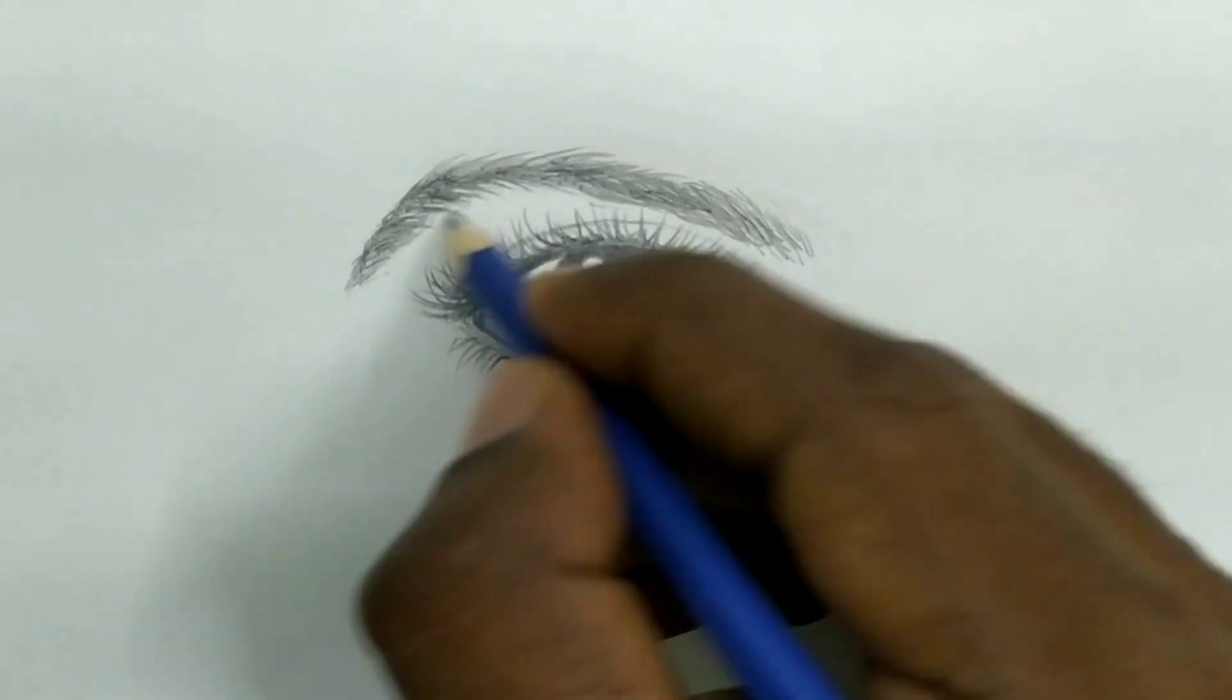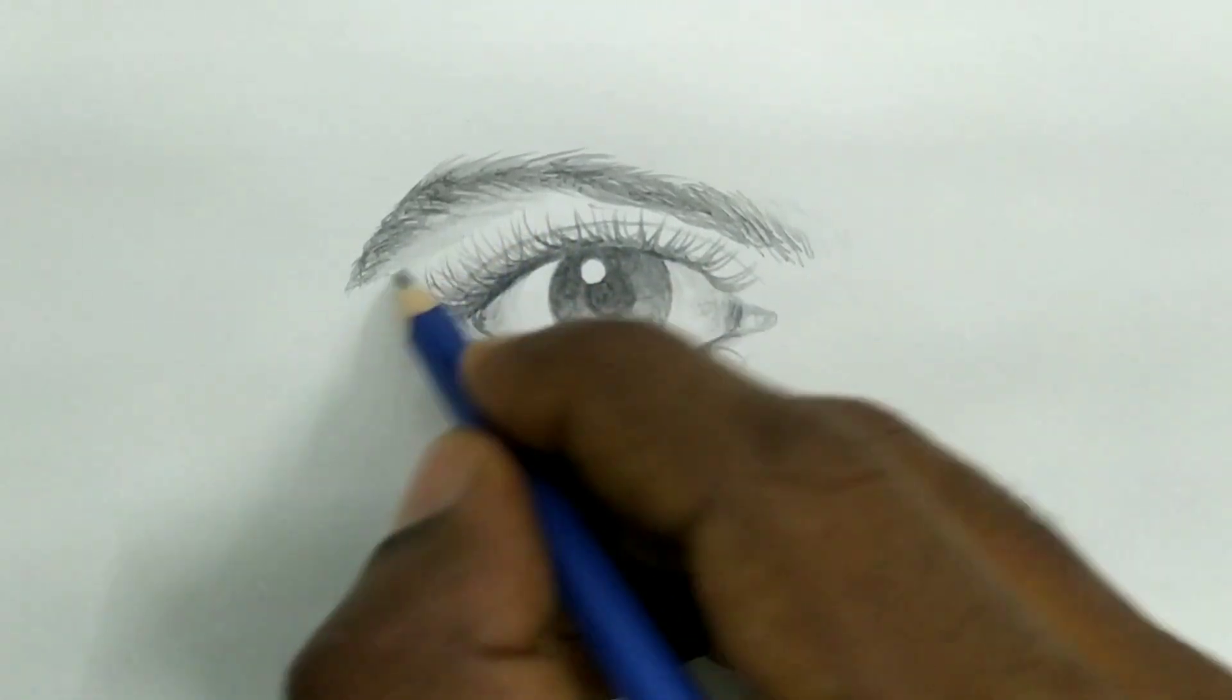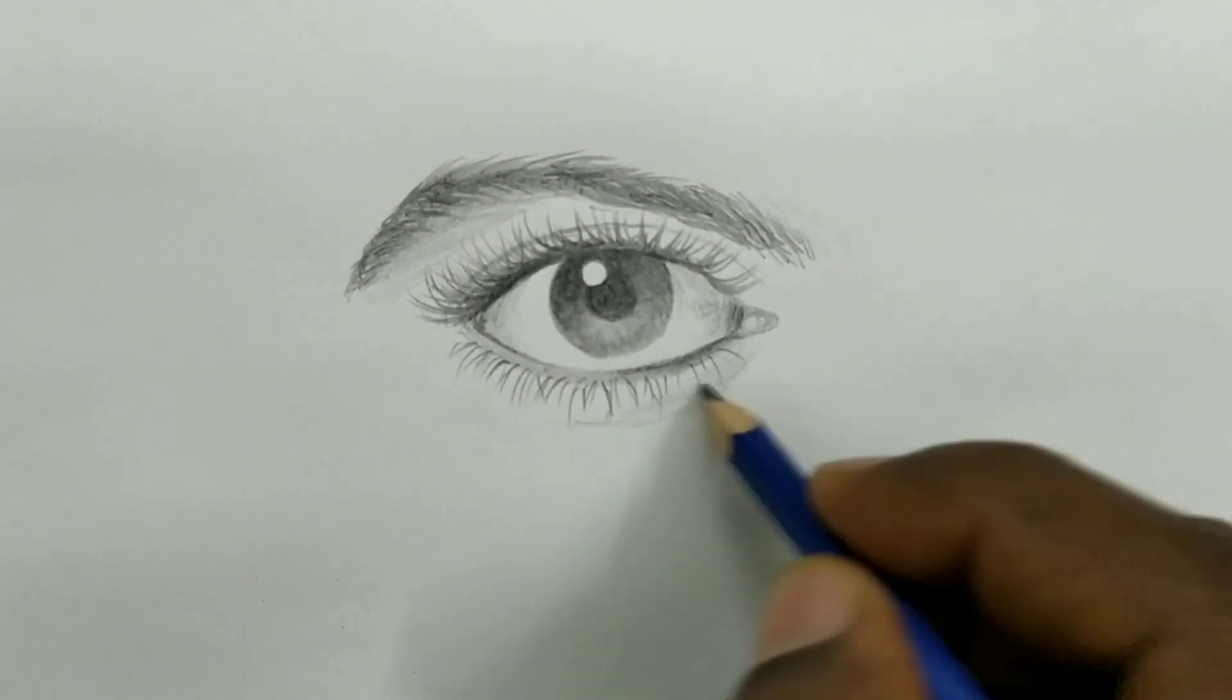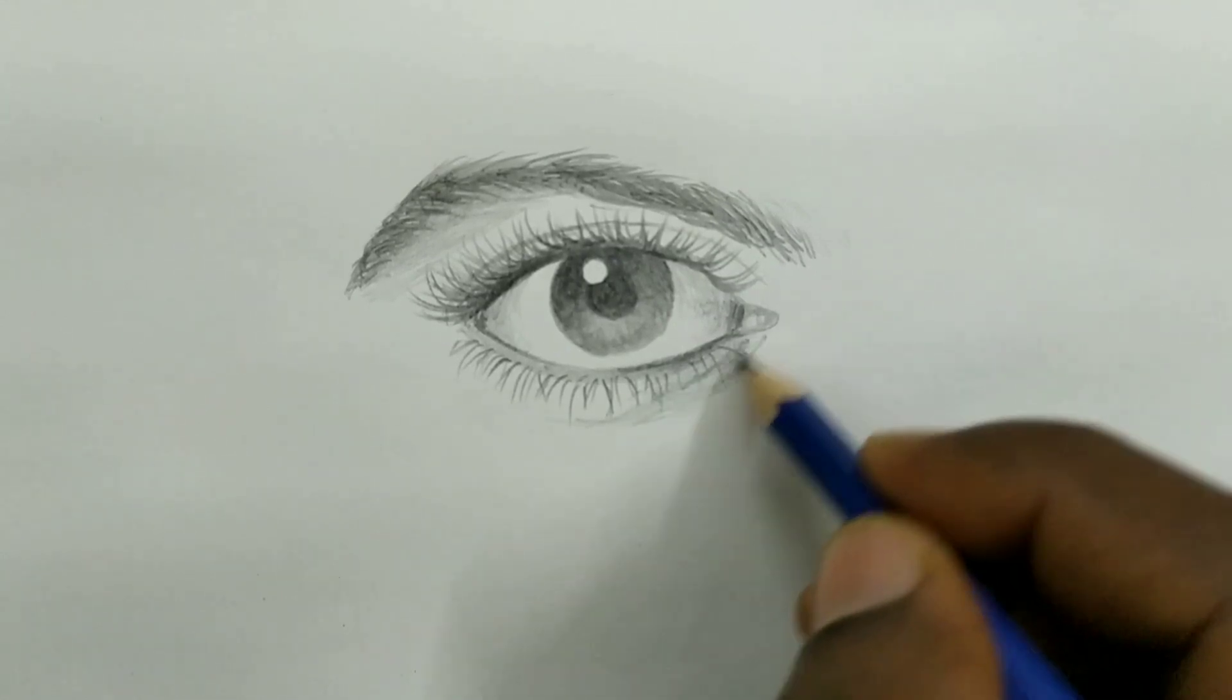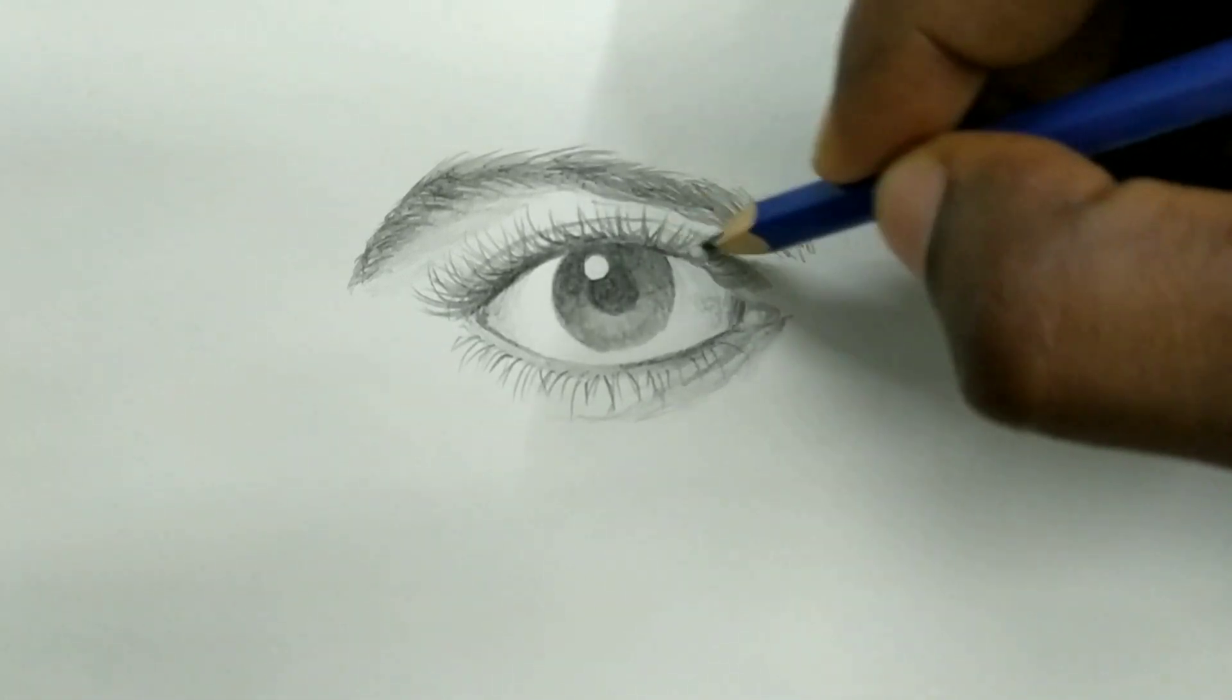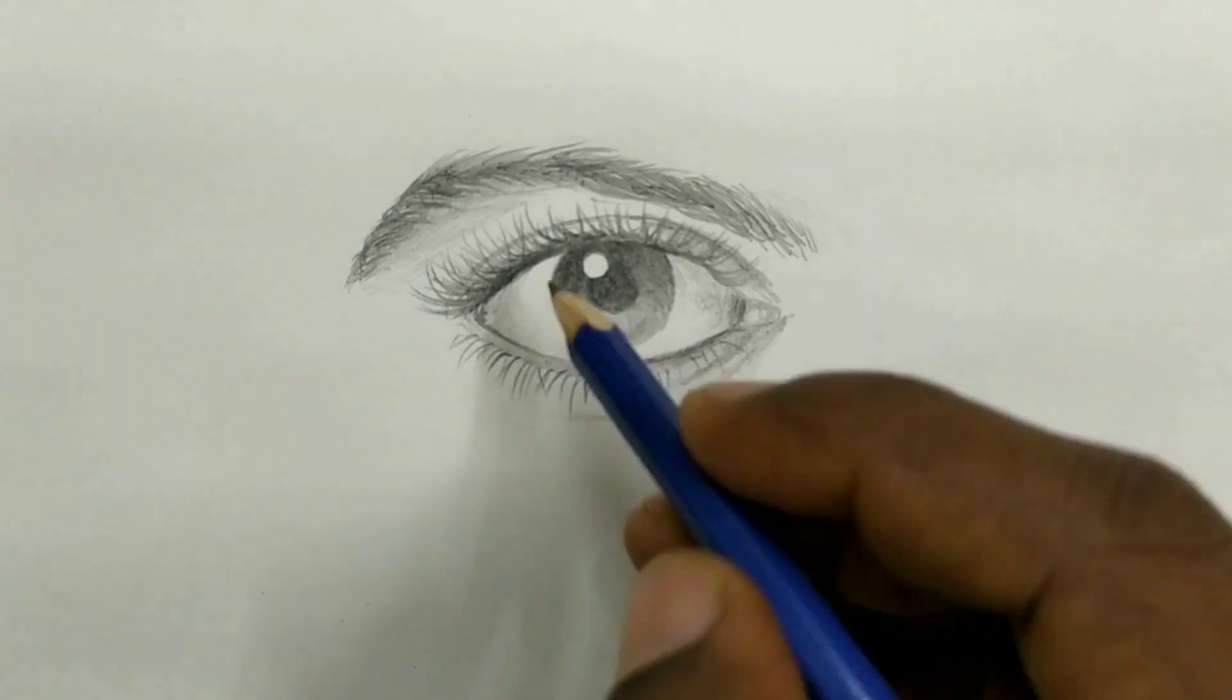Now let us add little bit shades. Add little bit shades to the lower eyelid so that that looks real. The depth and height of the eye can be visible. Little bit shades to the upper eyelid also.